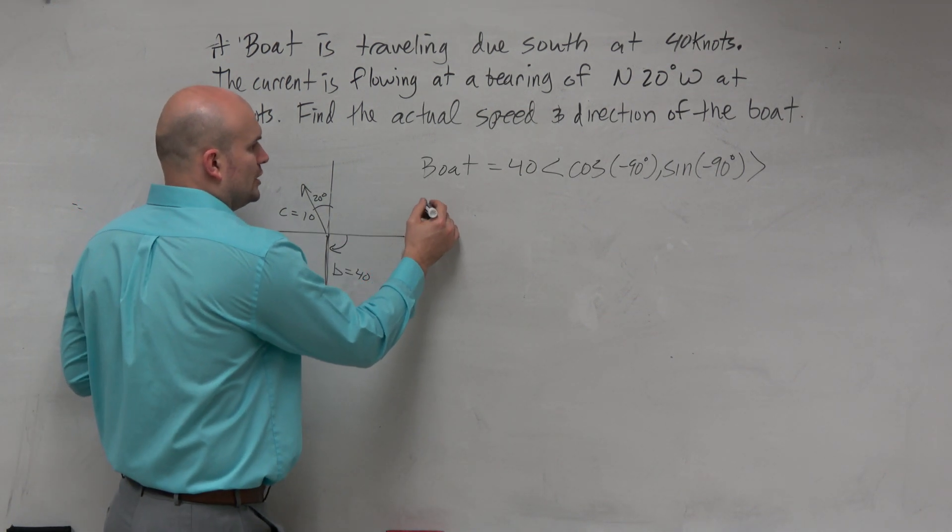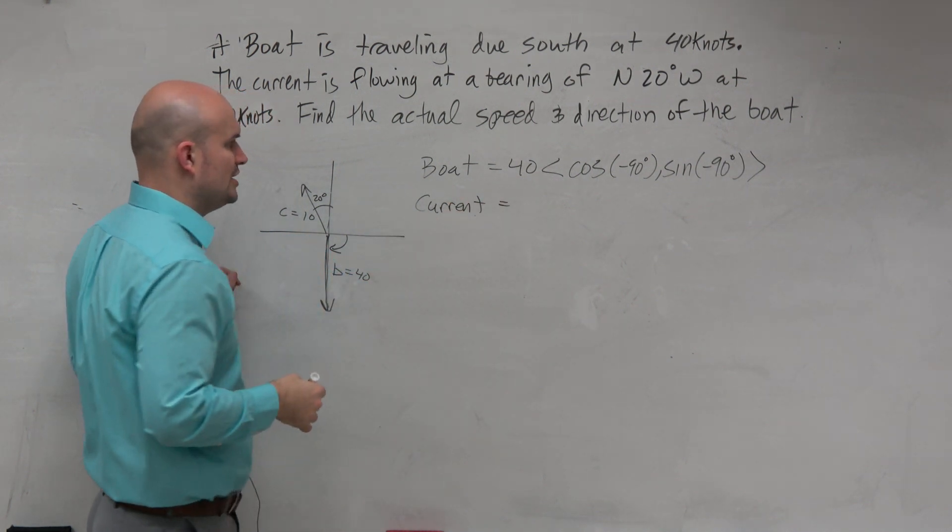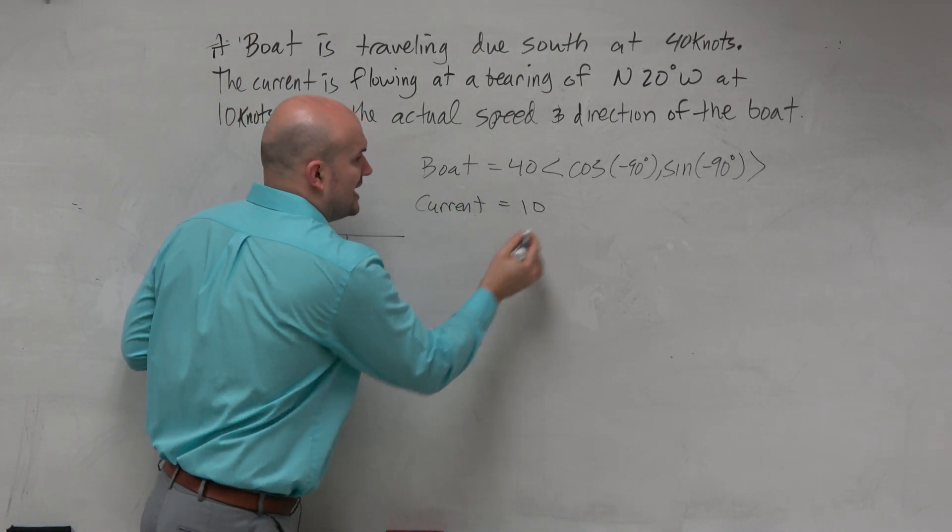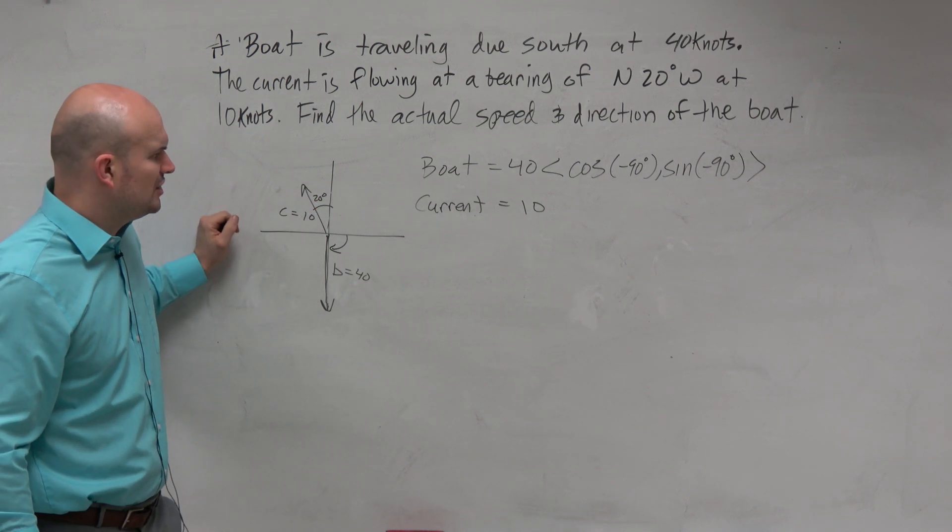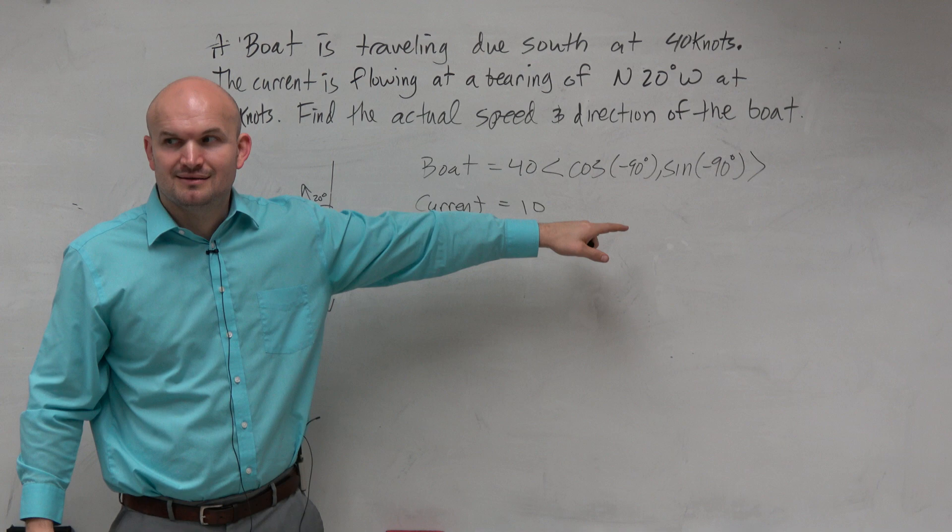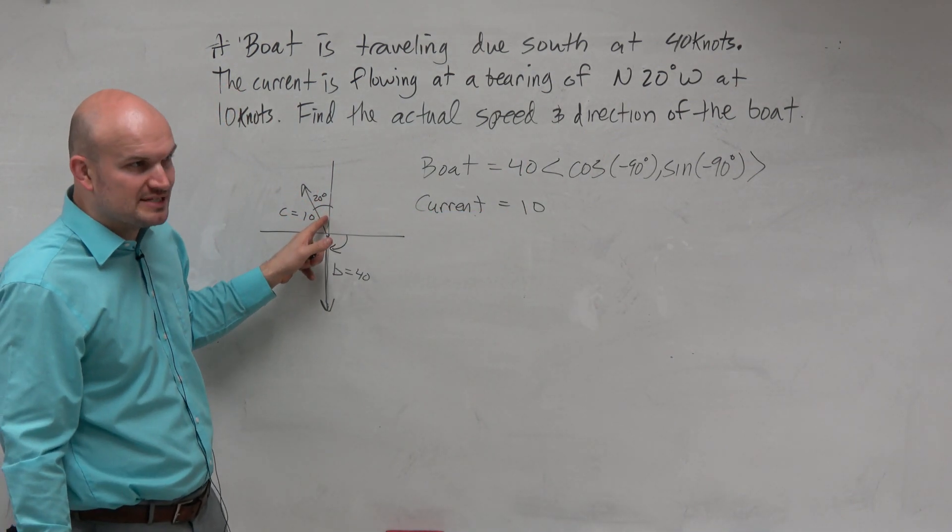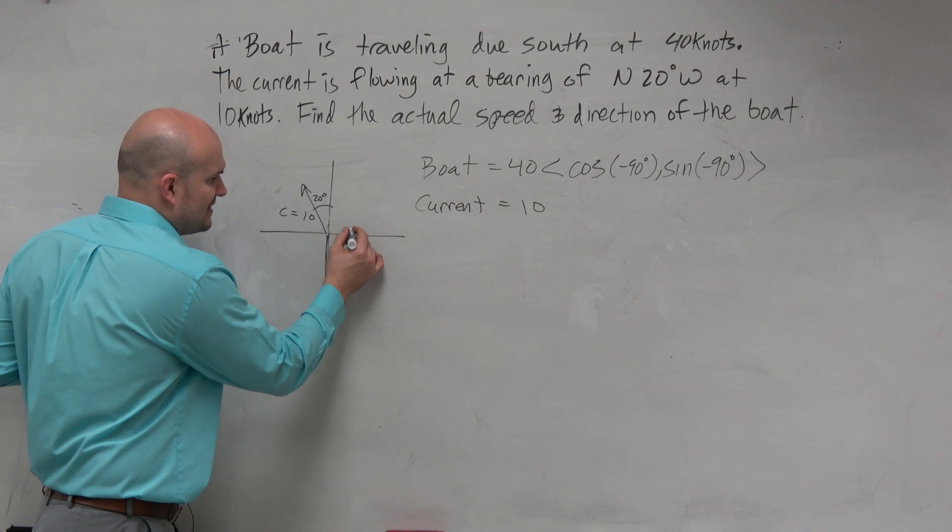Okay, and then let's go ahead and figure out the current. Well, the current is flowing at 10 knots, and now it's going at an angle of 20 bearings. Should we just do cosine of 20, sine of 20? No. You've got to follow standard form. Your calculator doesn't understand this as bearings. Your calculator understands this angle.